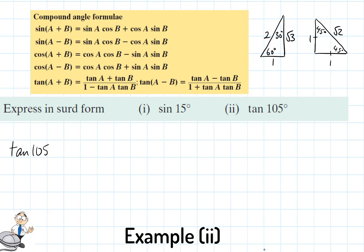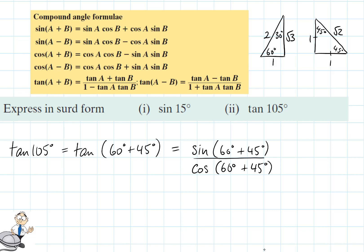In our second example we want to evaluate tan of 105 degrees. 105 degrees will be 60 degrees plus 45 degrees. Now tan is sine divided by cos of the angle, so it's sine 60 plus 45 divided by cos 60 plus 45. And we see above we have rules here for sine A plus B and cos A plus B. So we're going to use these rules to evaluate it.